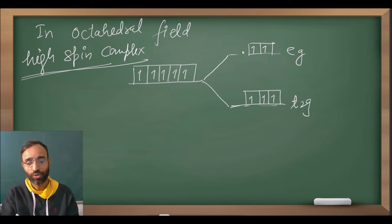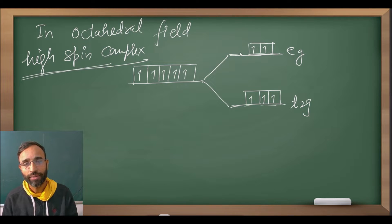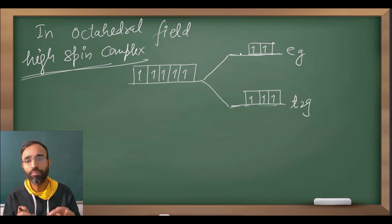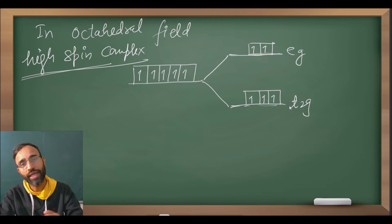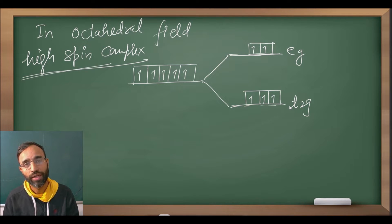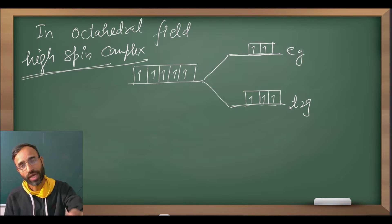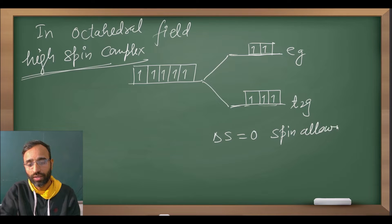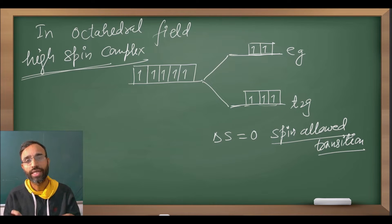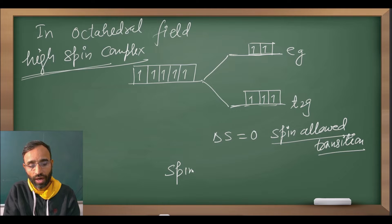When this is the arrangement in high spin, is there any spin-allowed transition possible for D5 configuration? The answer is no. There is no spin-allowed transition possible for D5 in high spin. Because in T2G all 3 electrons are up-spin, same for EG — all have the same spin. So when one electron is excited from T2G to EG, there is a reversal of spin. Since ΔS must be 0 for spin-allowed transitions, no such transition is possible, and all transitions are spin-forbidden.